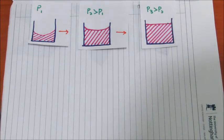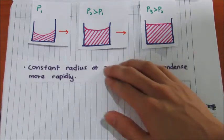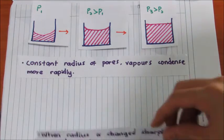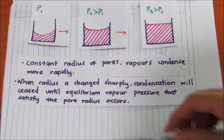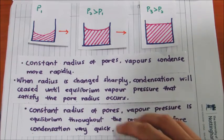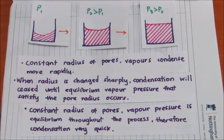Where radius changes, condensation will stop as the liquid needs more time to reach its new equilibrium vapor pressure. Since cylinder has constant radius, condensation occurs continuously as equilibrium pressure is constant.